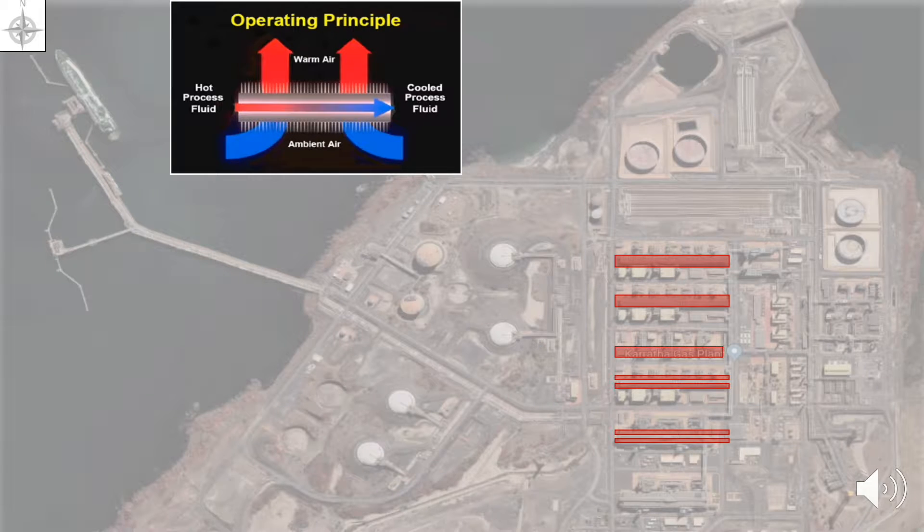The air-cooled heat exchangers have finned tubes through which the process fluid flows and hundreds of fans draw ambient air through the tubes which is used to cool the process fluids.